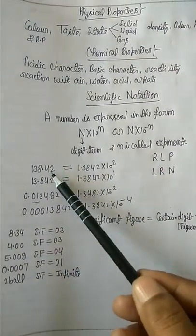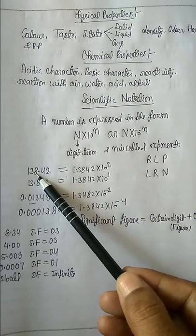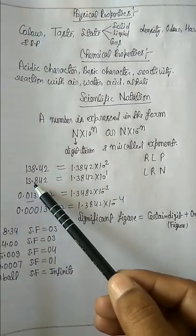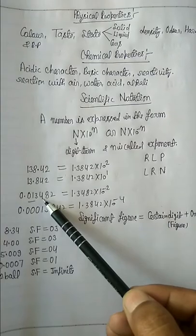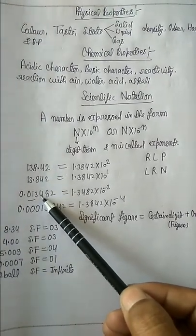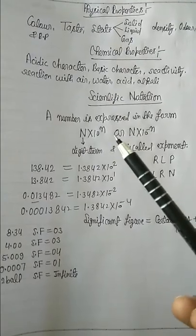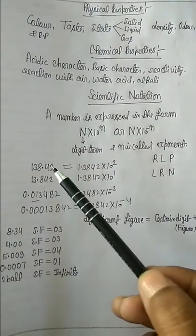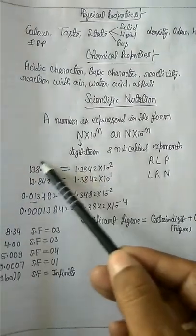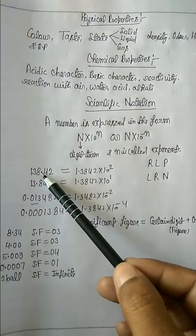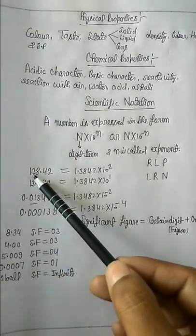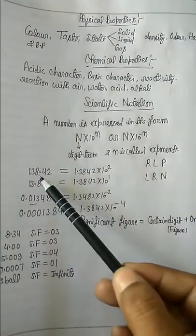Now the question is: write the following digits in scientific notation form. When we move the decimal from right to left, we take a positive power of 10. When we move the decimal from left to right, we take a negative power of 10. Scientific notation means we place the decimal after one digit. For example, 1.3842 × 10^-2.